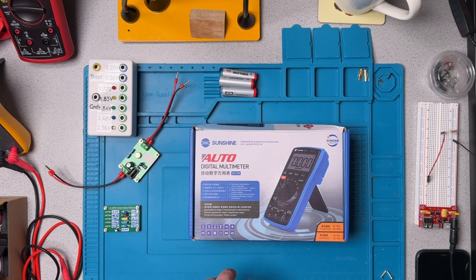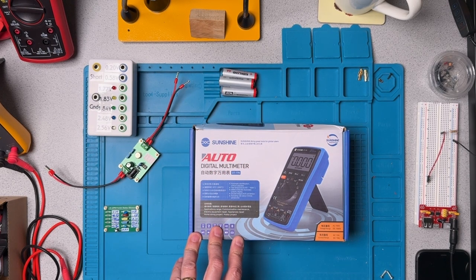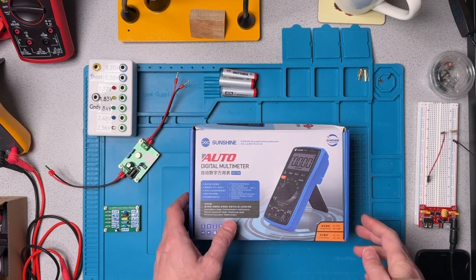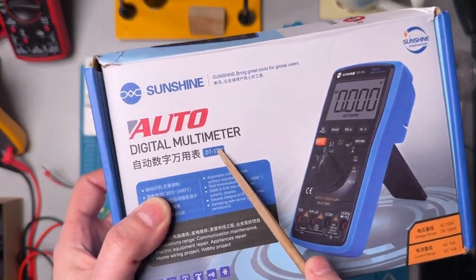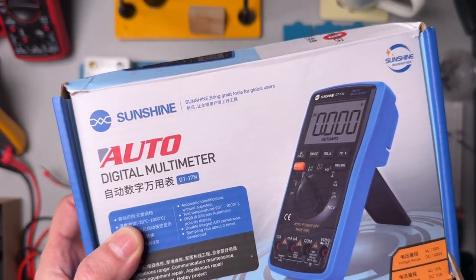Hi there, Jim here. Today in the lab, we're going to have a look at this Sunshine DT 17N digital multimeter.